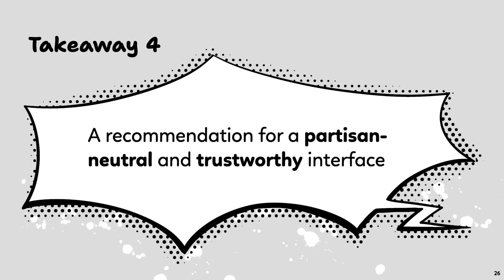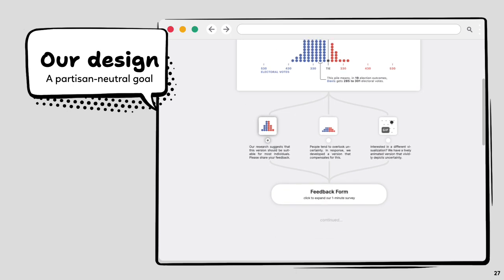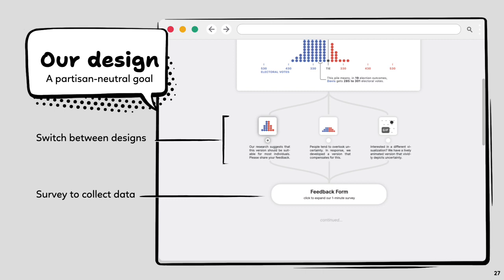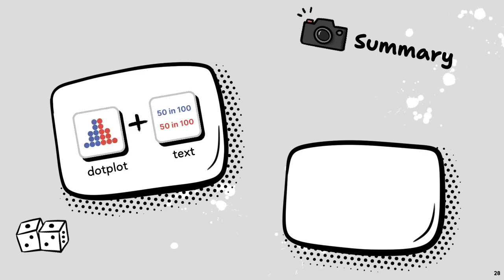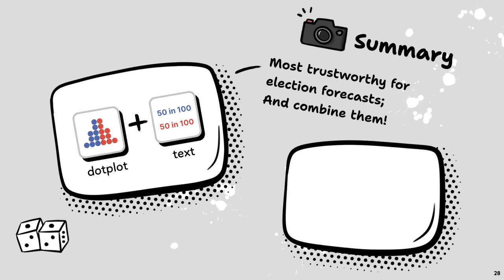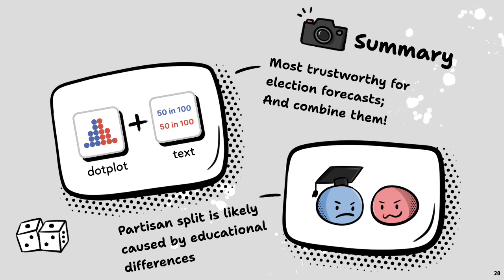With these results, we recommend a combined text with dot plot interface to bridge views from different educational backgrounds, and also recommend adding different visualization options on the website since users may have different preferences. If resources permit, designers could add a short survey to collect users' trust responses. To summarize: the most trustworthy representations are text and dot plot, and combining them yields a trustworthy and partisan-neutral interface. There is a strong partisan split likely explained by educational differences, and people's attitudinal trust differs from their behavioral actions.